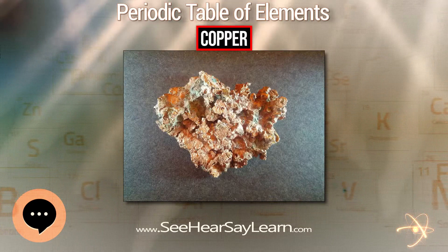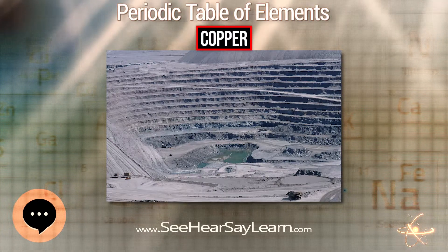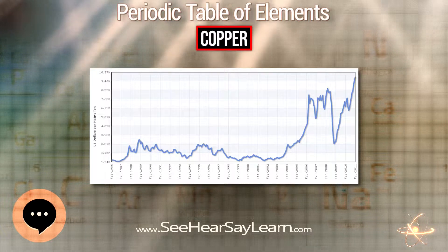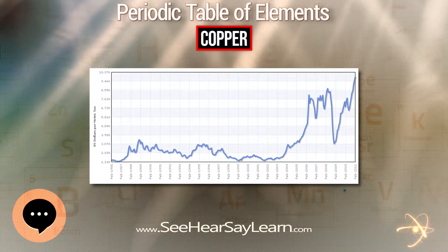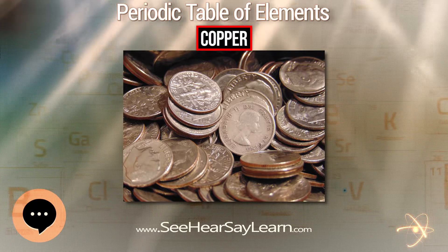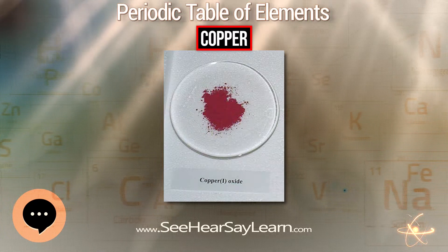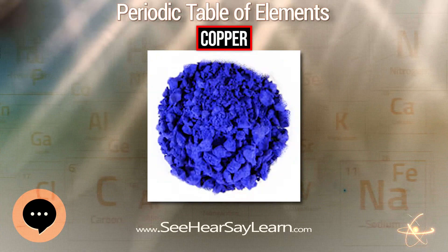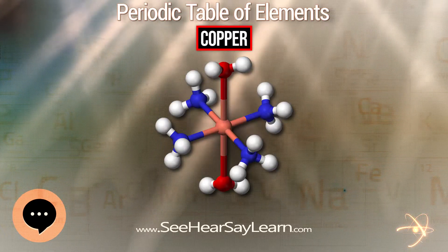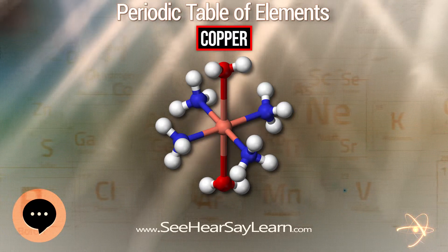The reaction with organolithium reagents in particular produces a Gilman reagent. These can undergo substitution with alkyl halides to form coupling products, making them important in organic synthesis. Copper acetylide is highly shock-sensitive but is an intermediate in reactions such as the Cadiot-Chodkiewicz coupling and the Sonogashira coupling. Conjugate addition to enones and carbocupration of alkynes can also be achieved with organocopper compounds.